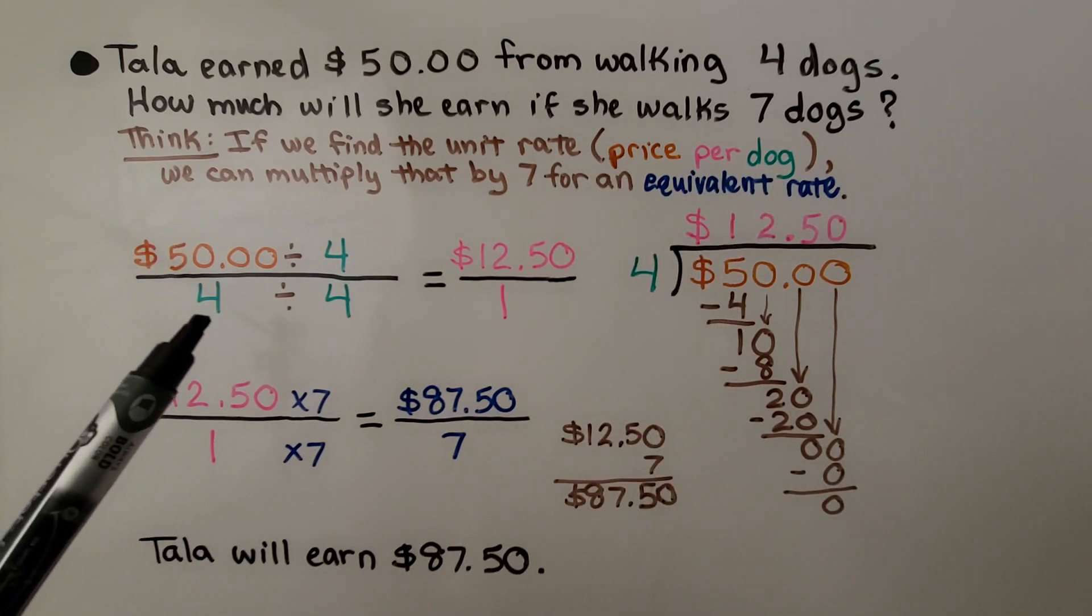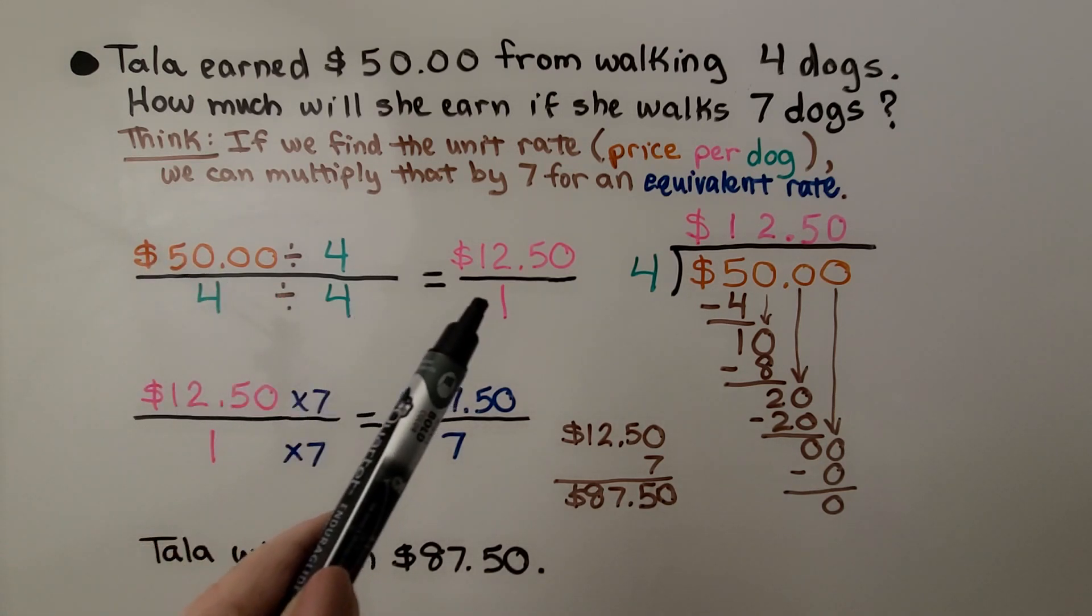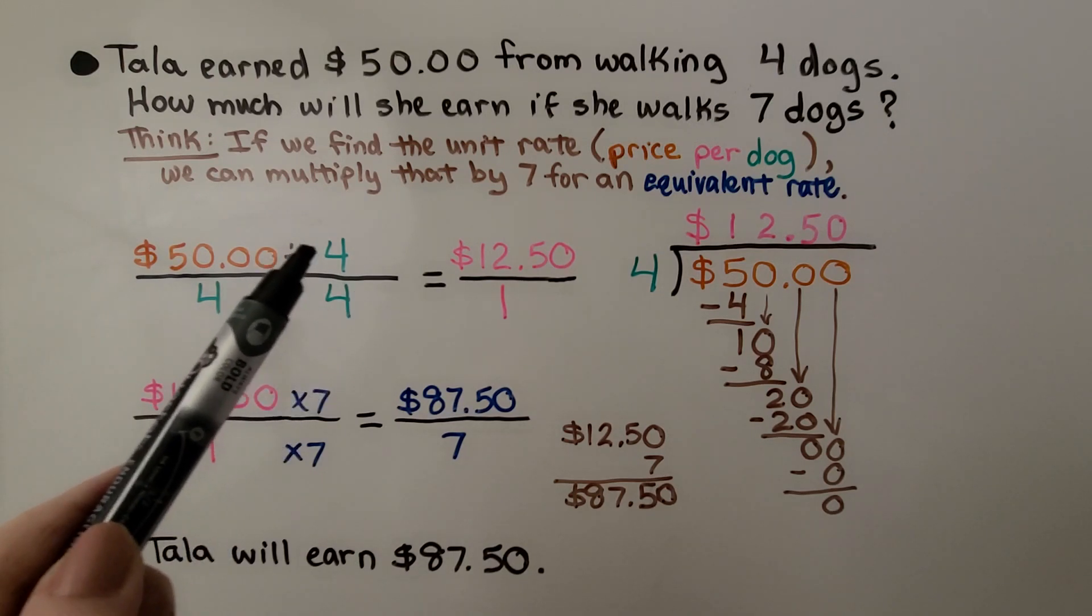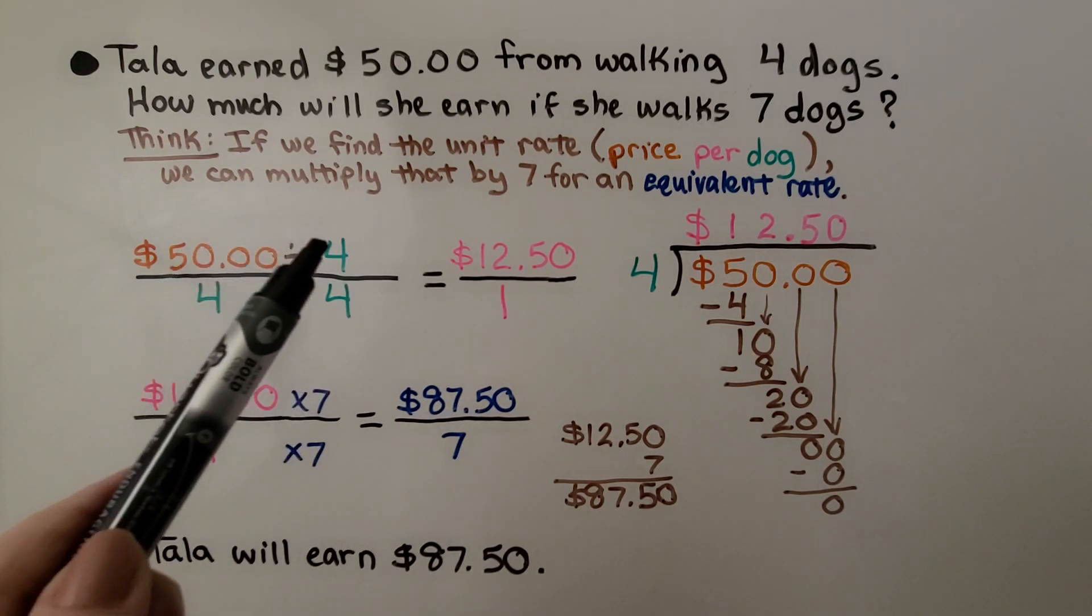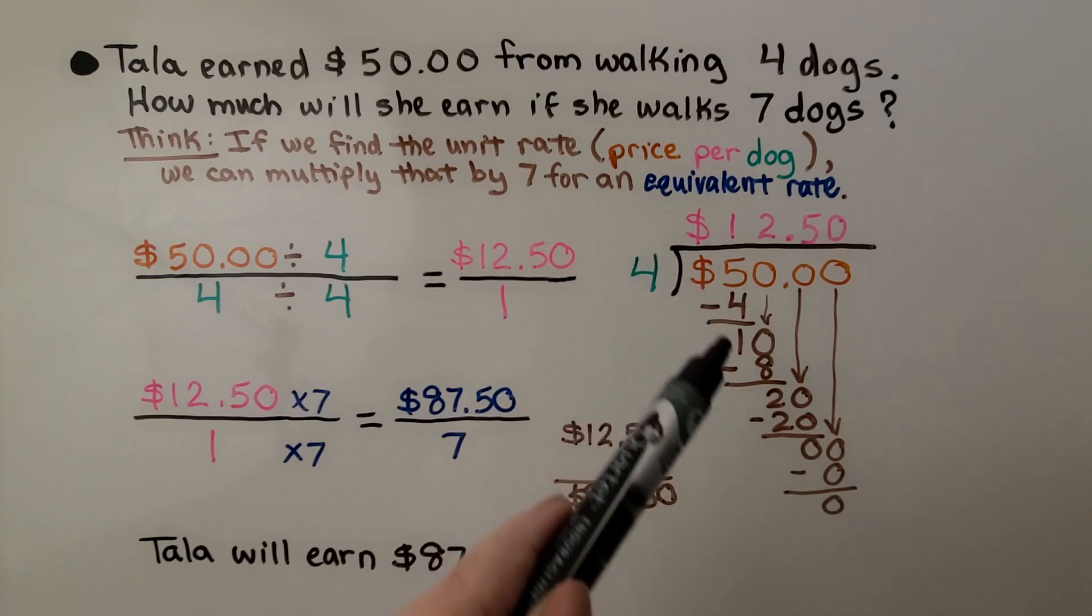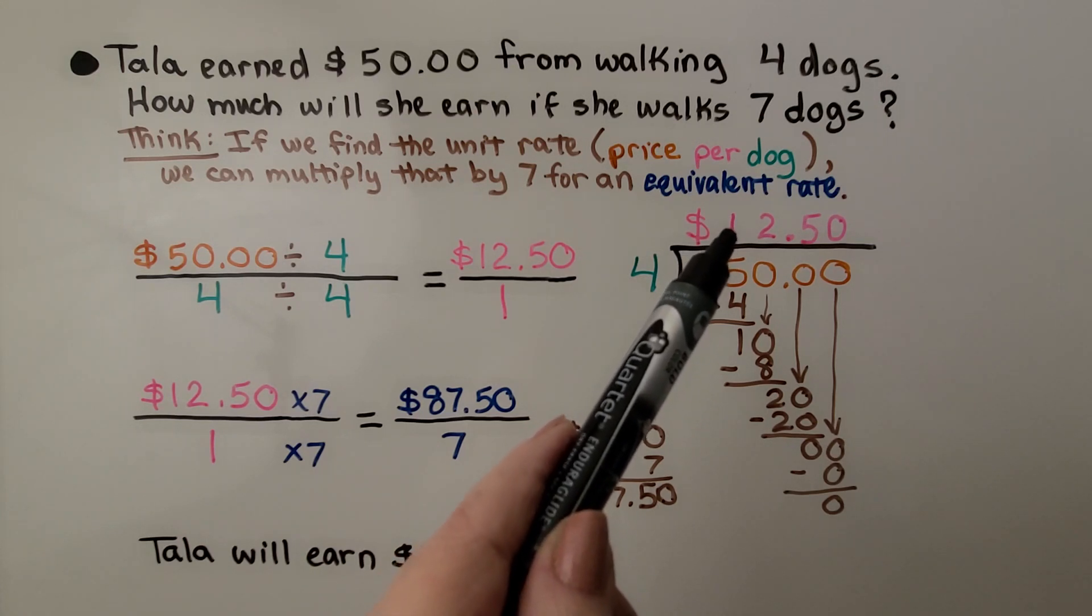$50 for four dogs. That's our rate. We know we want our denominator to be one, so we're going to do four divided by four. This one needs to be divided by the same amount, so we have $50 divided by four. We can do some division on the side. Four fits into $50. We do our math and get $12.50.